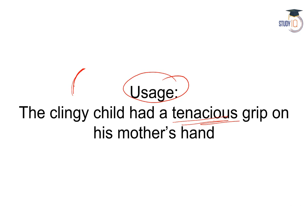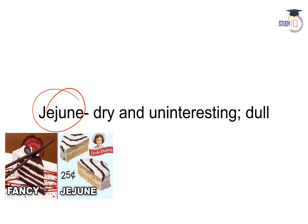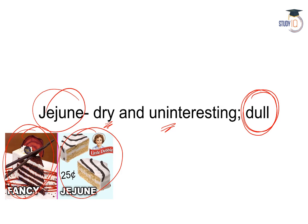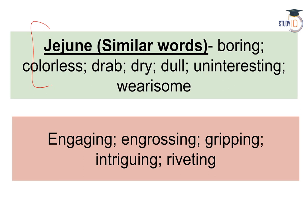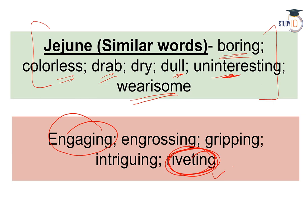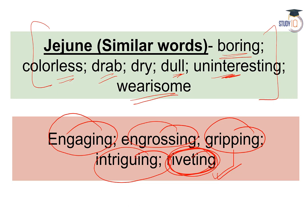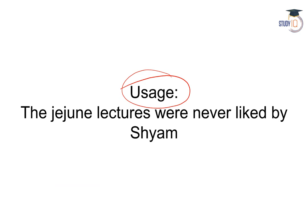Moving on to jejune. Jejune shabd ka arth hota hai — aisi cheez jo boring hai, dull hai, dry hai, uninteresting hai, simple plain hai. Synonyms: boring, colorless, drab, dull, uninteresting, wearisome. Antonyms: engaging, riveting, gripping, engrossing, intriguing. Usage: The jejune lectures were never liked by Sham — the boring, dull lectures.